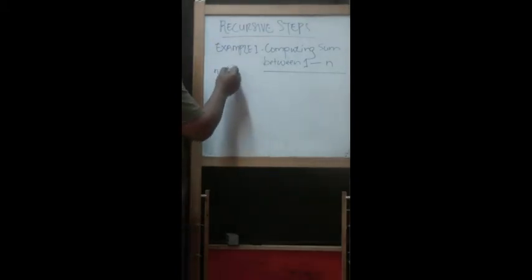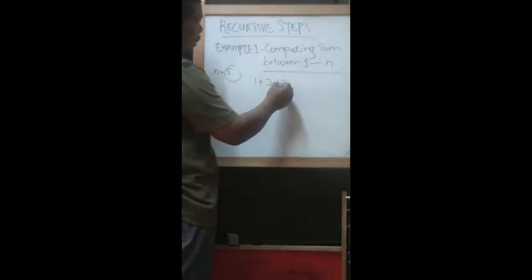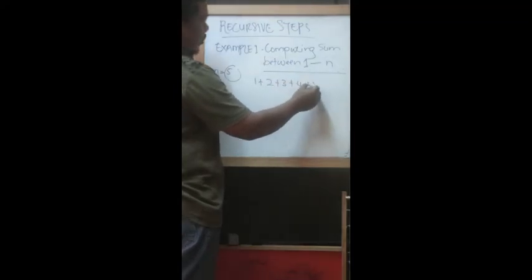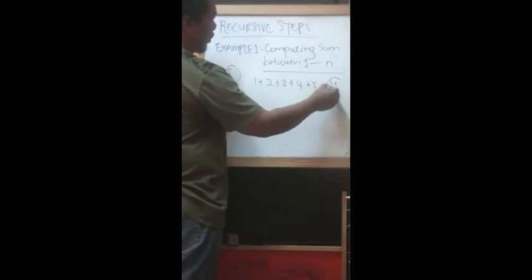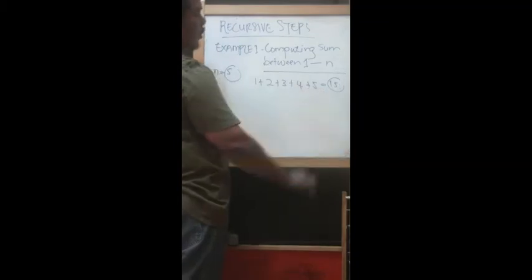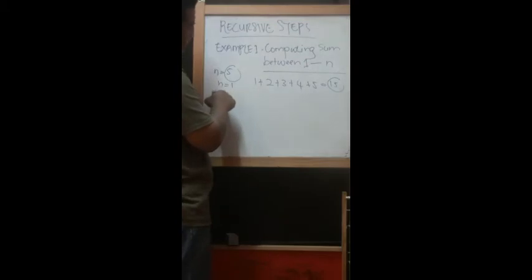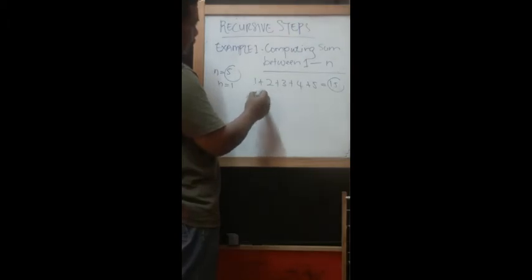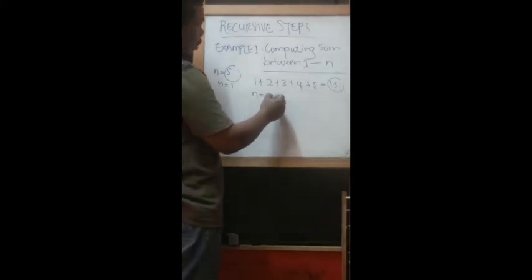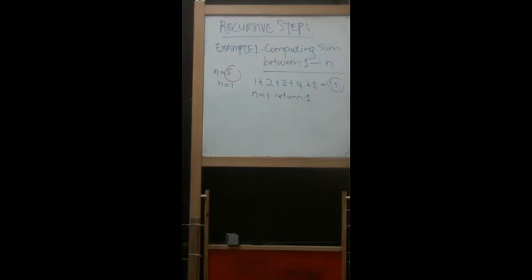The summation starts with one plus two plus three plus four plus five, which equals fifteen. The base case is when n equals one, we return one. This is the stopping criteria of the recursion.